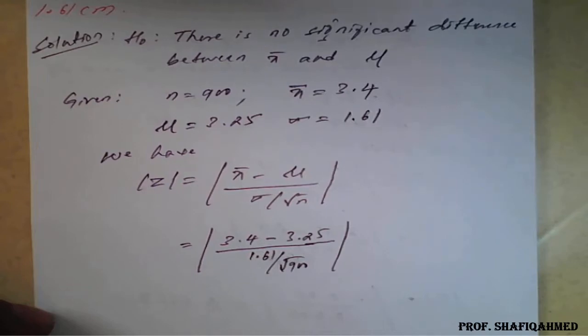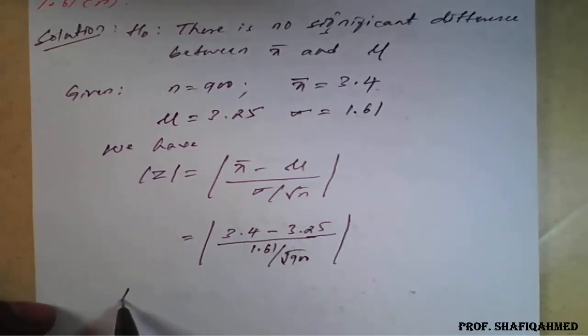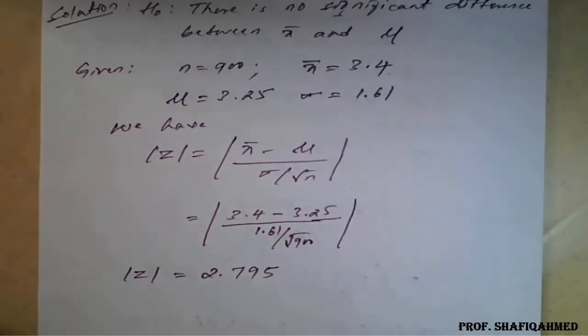On simplification, we will get |Z| = 2.795.